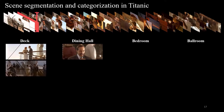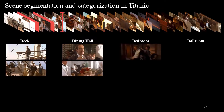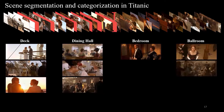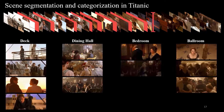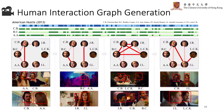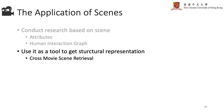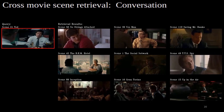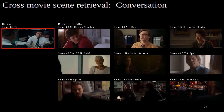For example, we can classify the segmented scenes into different categories according to the place. We can also generate human interaction graphs which visualize the human relationship changes across the movie. From another perspective, the scene can be used as a tool to get a structural representation to understand movies. The structural representation learned from scene segmentation can be utilized to retrieve similar scenes across movies.